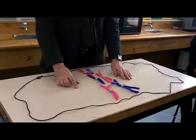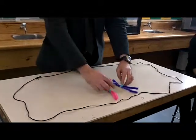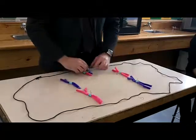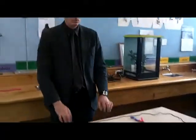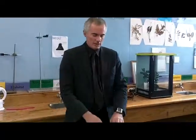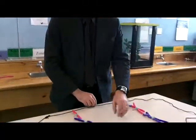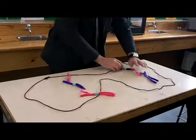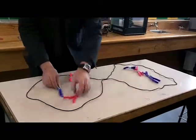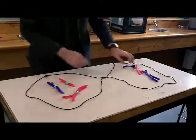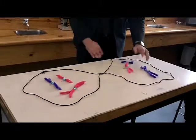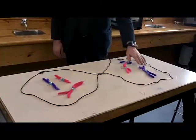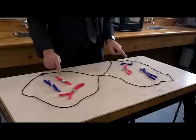The next stage is the pairs are separated. We end up with two intermediate cells. Each cell now has a single duplicated chromosome from each of the chromosome pairs.